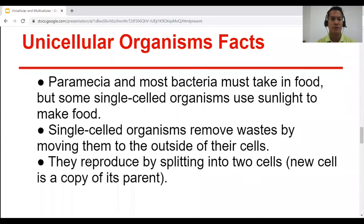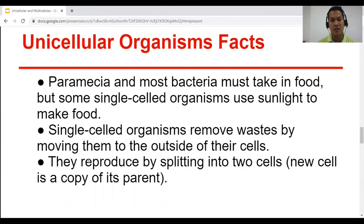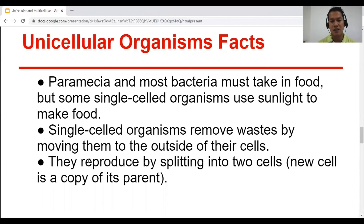So amoeba and most bacteria must take in food, but some single-celled organisms like Euglena use sunlight to make food. Single-celled organisms remove wastes by moving them to the outside of their cells. They reproduce by splitting into two cells, just like what we saw with Streptococcus huminae — we call it binary fission.